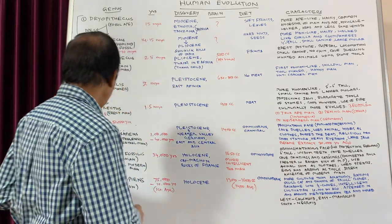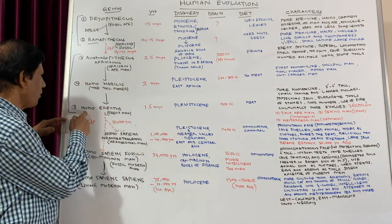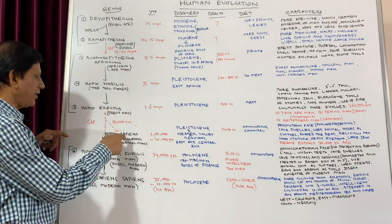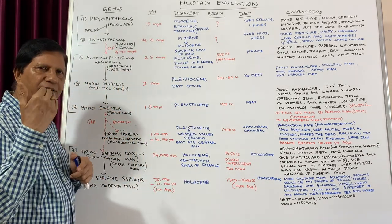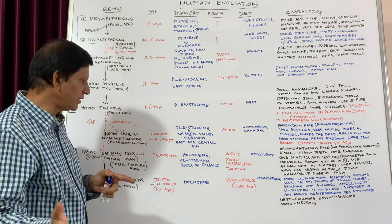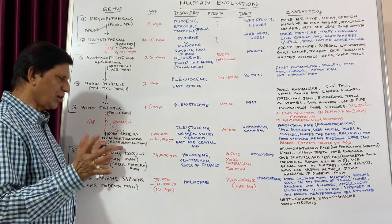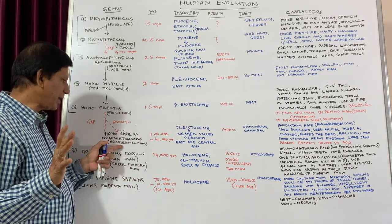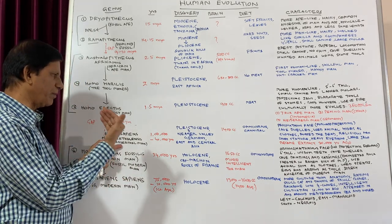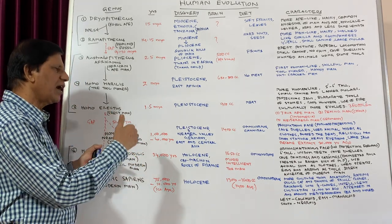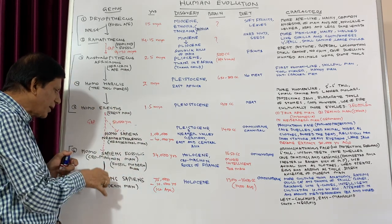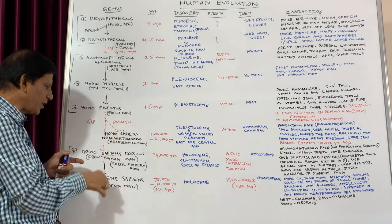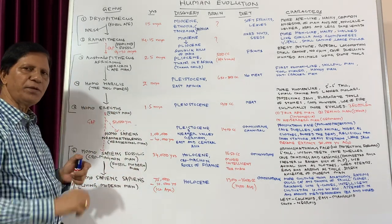The problem is that Neanderthal man became completely extinct around 30,000 years ago. They are completely fossils — none are living — and they are not a part of the evolutionary lineage leading to modern human beings.